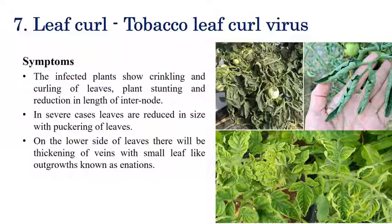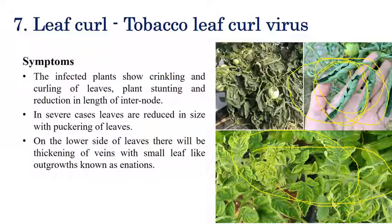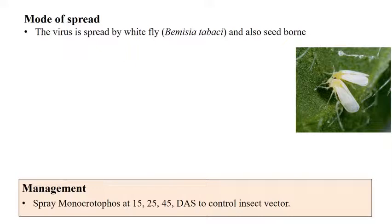The next disease is leaf curl, caused by Tobacco Leaf Curl Virus. The name indicates curling or crinkling of leaves, along with yellowing. Stunting of plants and reduction in leaf size can be observed. In severe stages, the plant may die. Enations — outgrowths or bending of leaves — are also characteristic symptoms of this disease.